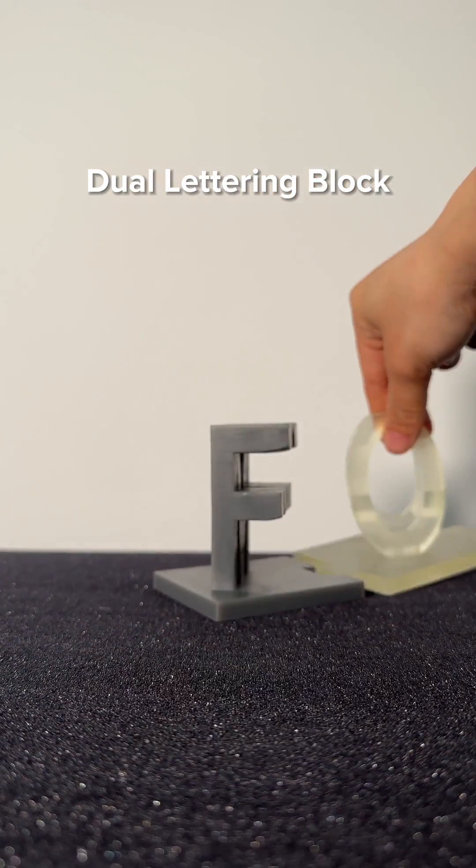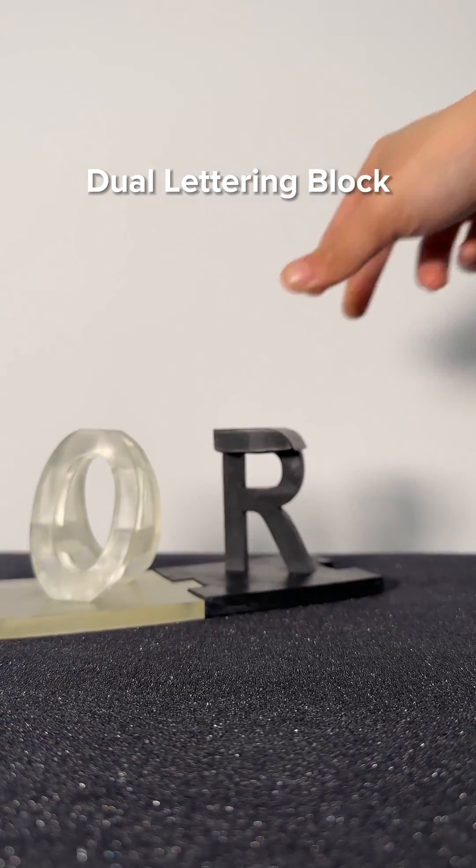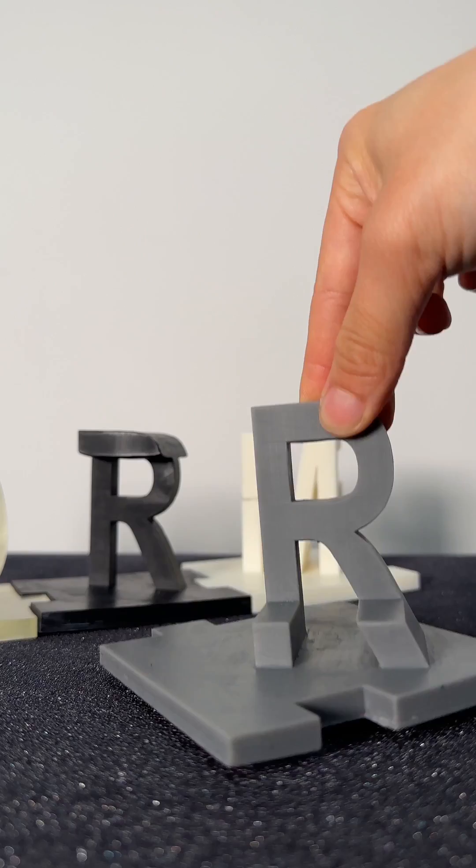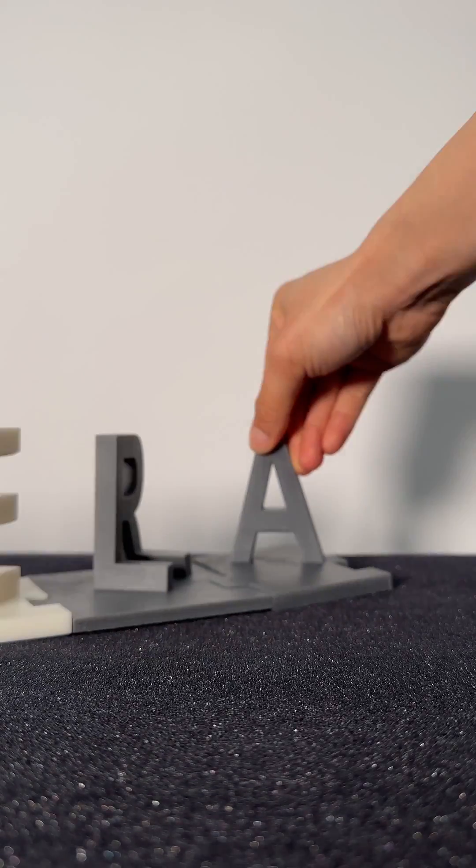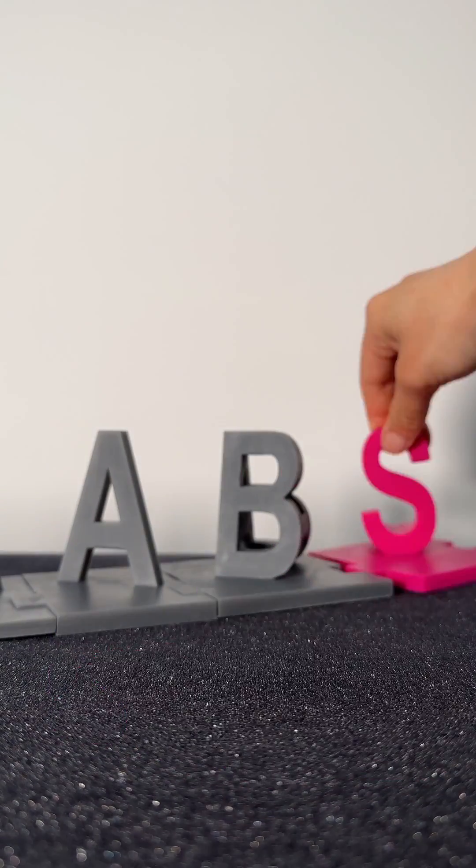Today we 3D printed the classic dual lettering block where each letter was printed using a different general purpose resin from the Formlabs materials library, which by the way is one of the largest and most diverse material libraries in the world.